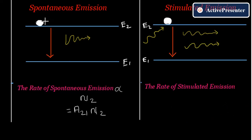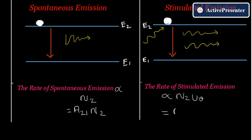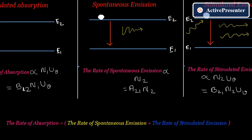For stimulated emission, the electron is already at the higher state energy level E2. The rate of stimulated emission is directly proportional to N2 and to u(ν), the energy absorbed for the stimulation process. Removing the proportionality using Einstein coefficient B21, the rate of stimulated emission equals B21·N2·u(ν).